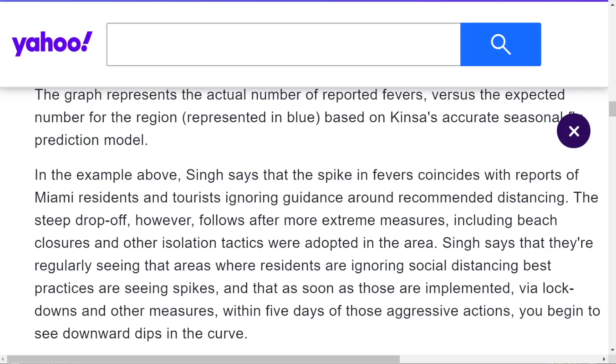The article goes on to quote Mr. Singh, the CEO of Kinsa. In the example above, Singh says that the spike in the fevers coincides with reports of Miami residents and tourists ignoring guidance around recommended distancing. The steep drop-off, however, follows after more extreme measures including beach closure and other isolation tactics were adopted in the area. Singh says that they're regularly seeing that areas where residents are ignoring social distancing are seeing spikes, and that as soon as those are implemented via lockdowns and other measures, within five days of those aggressive actions, you begin to see downward dips in the curve.